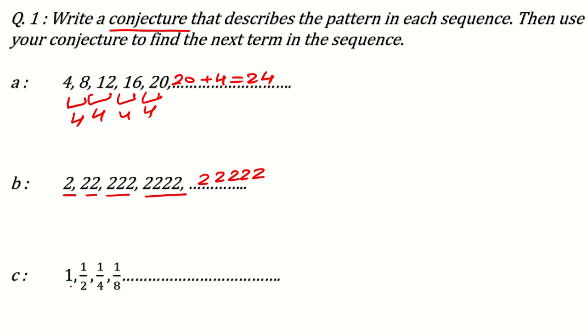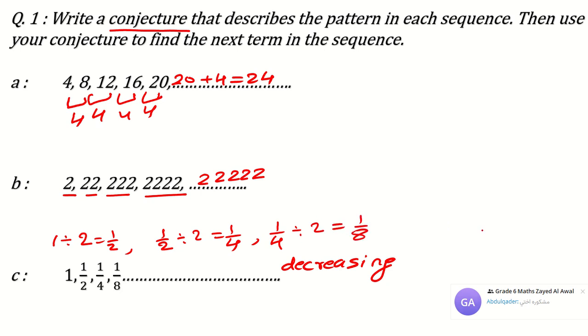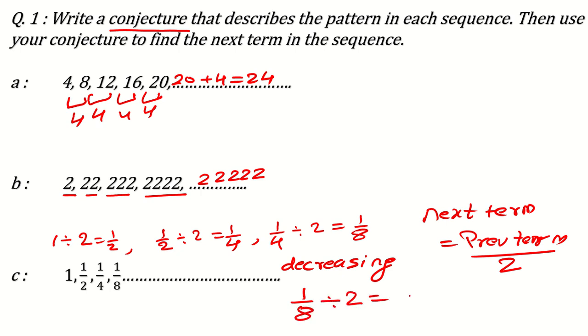Another question can be 1, then half, then 1 over 4, then 1 over 8 and so on. So what you can see here, terms are in decreasing order. If you divide 1 by 1 over 2, then you will get the answer 1 over 2. Again, you divide 1 over 2 by 2, then you will get 1 over 4. Again, if you divide 1 over 4 by 2, then you will get 1 over 8. So what conjecture we are following here? That next term is equal to previous term divided by 2. So what will be the next term? Next term will be 1 over 8 divided by 2 means it will be 1 over 16.